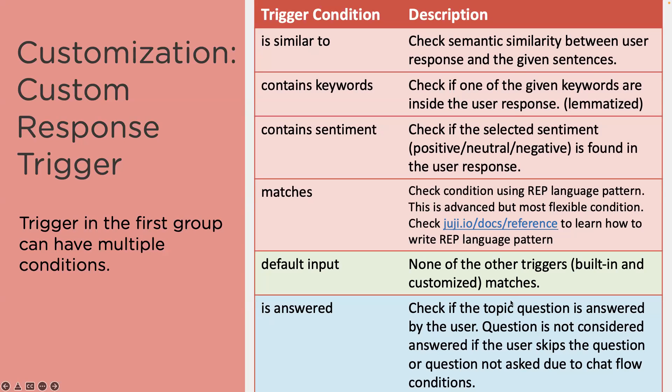The 'default inputs' trigger fires when none of the other triggers match. 'Is answered' is different from the other conditions and usually works with follow-ups — it's like a precondition in a follow-up, so if the question is answered, the follow-up will be triggered. When the user skips the question, or the question is not asked at all due to your chat flow design — for example, if you branched out to a different branch — then the question is considered not answered.